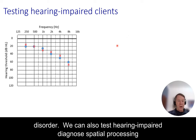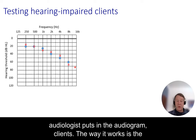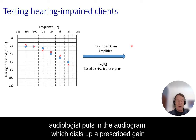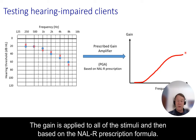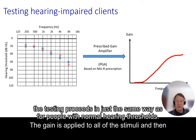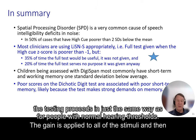We can also test hearing-impaired clients. The audiologist puts in the audiogram, which dials up a prescribed gain amplifier giving a prescription based on the NAL-R prescription. Gain is applied to all of the stimuli and then the testing proceeds in exactly the same way.